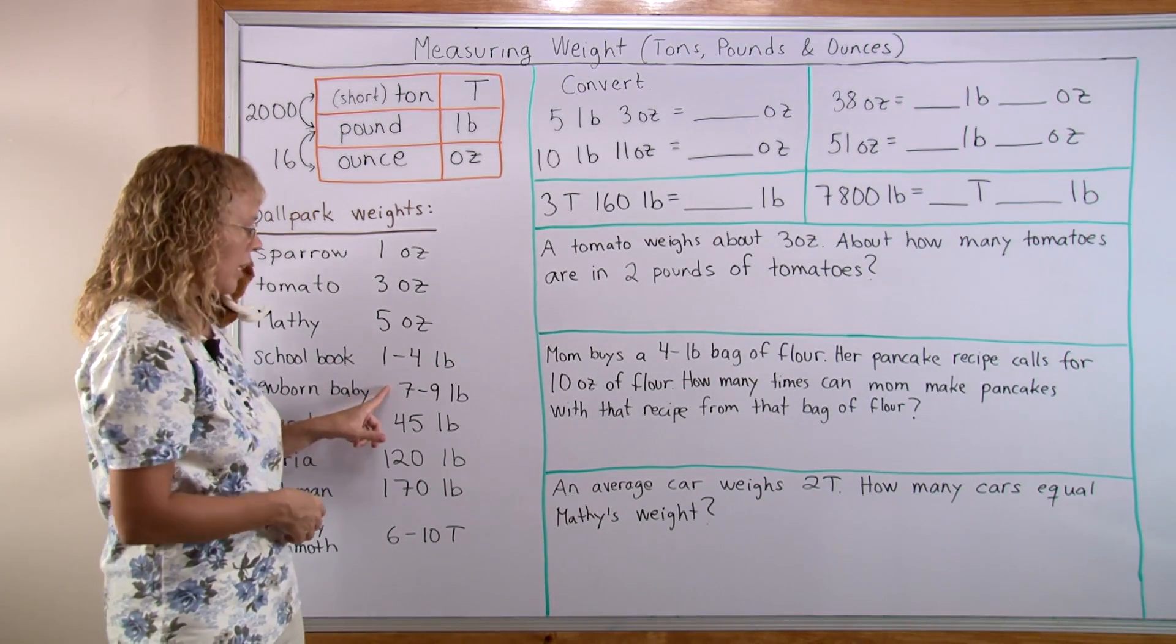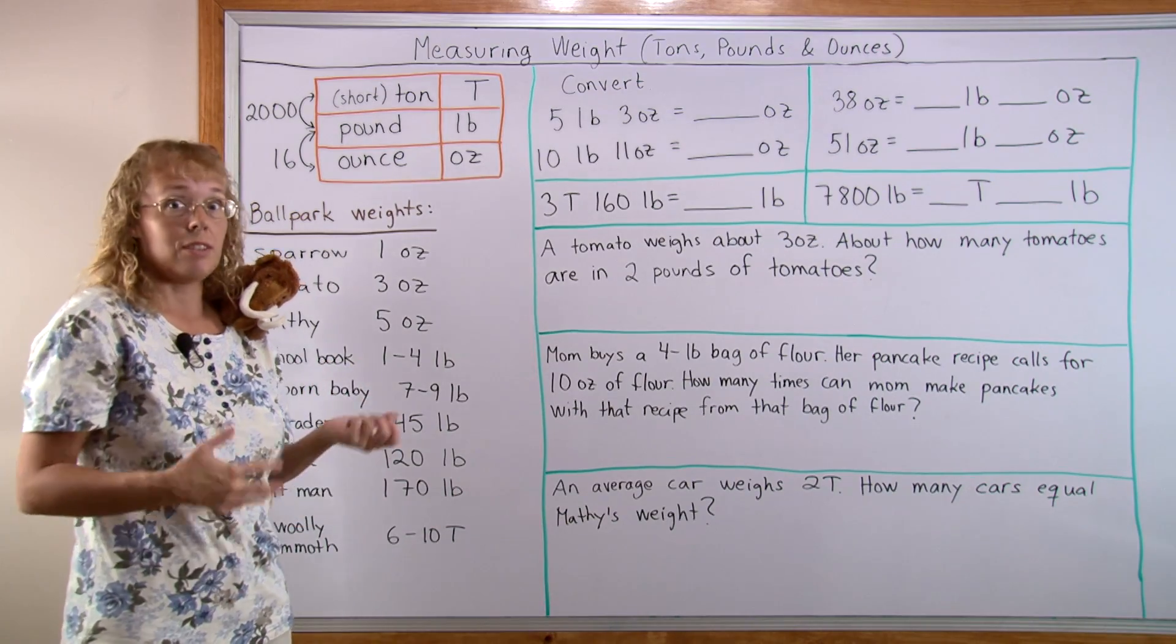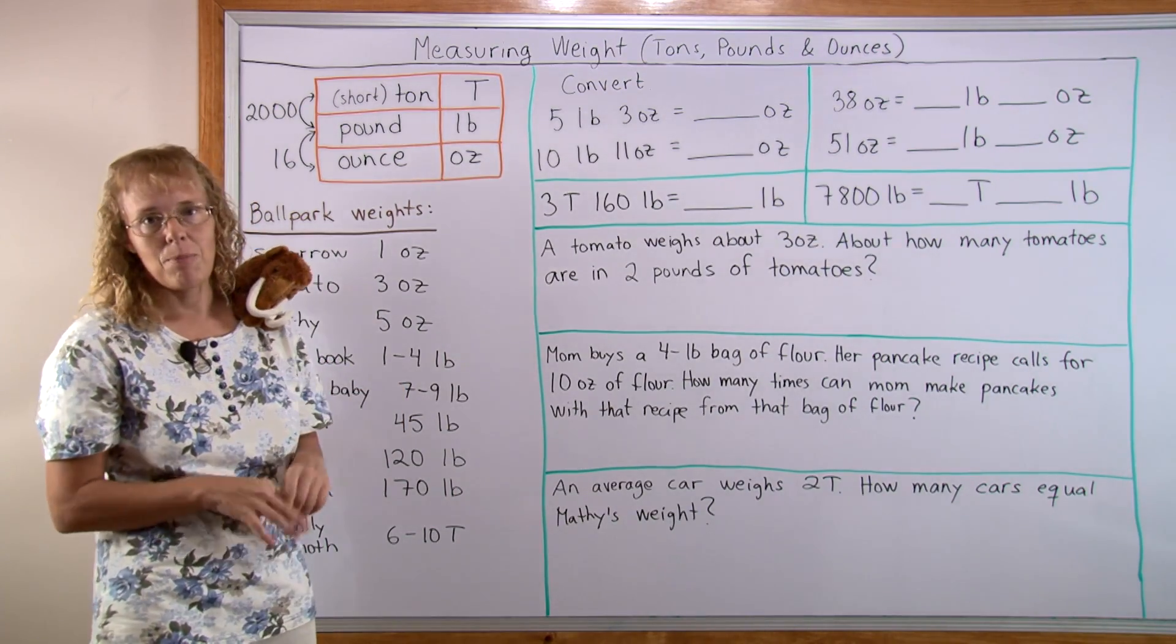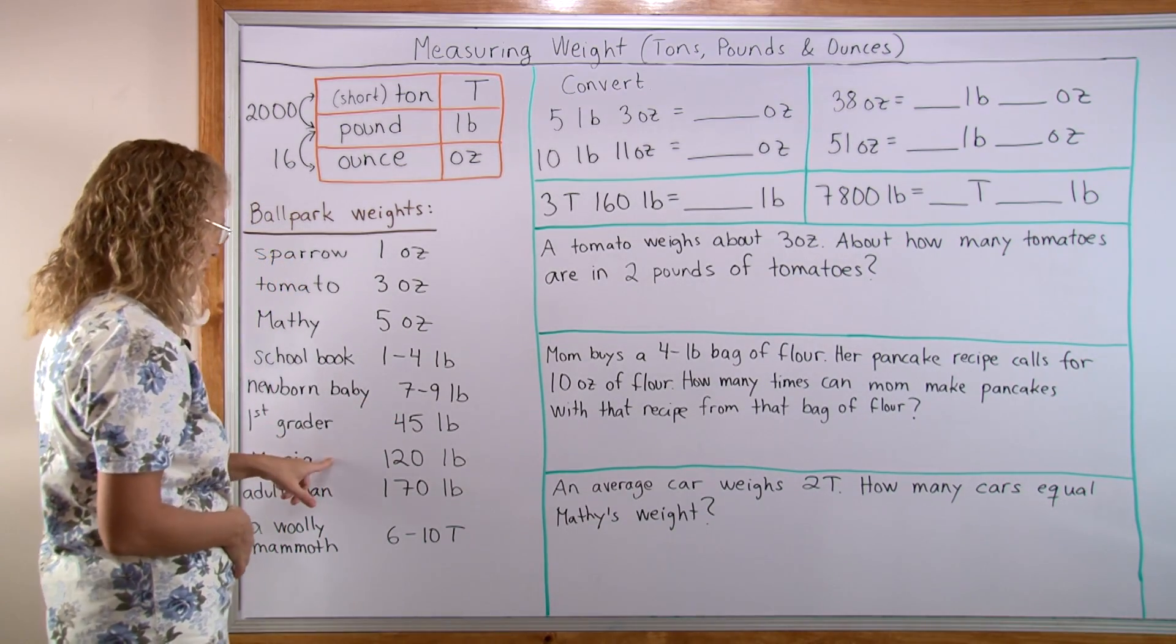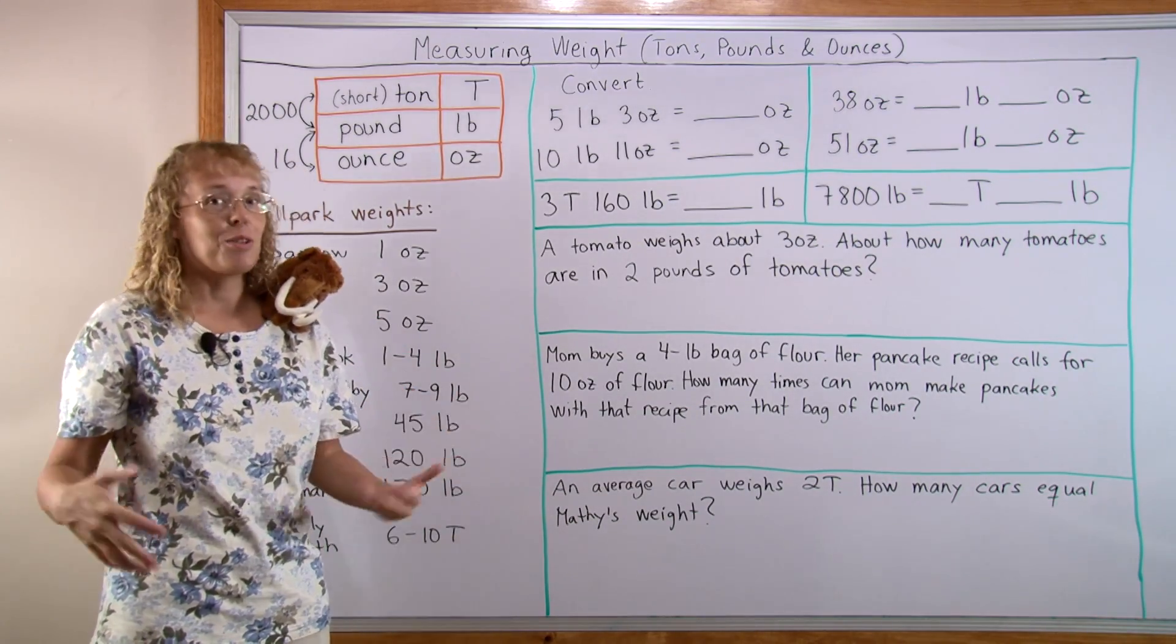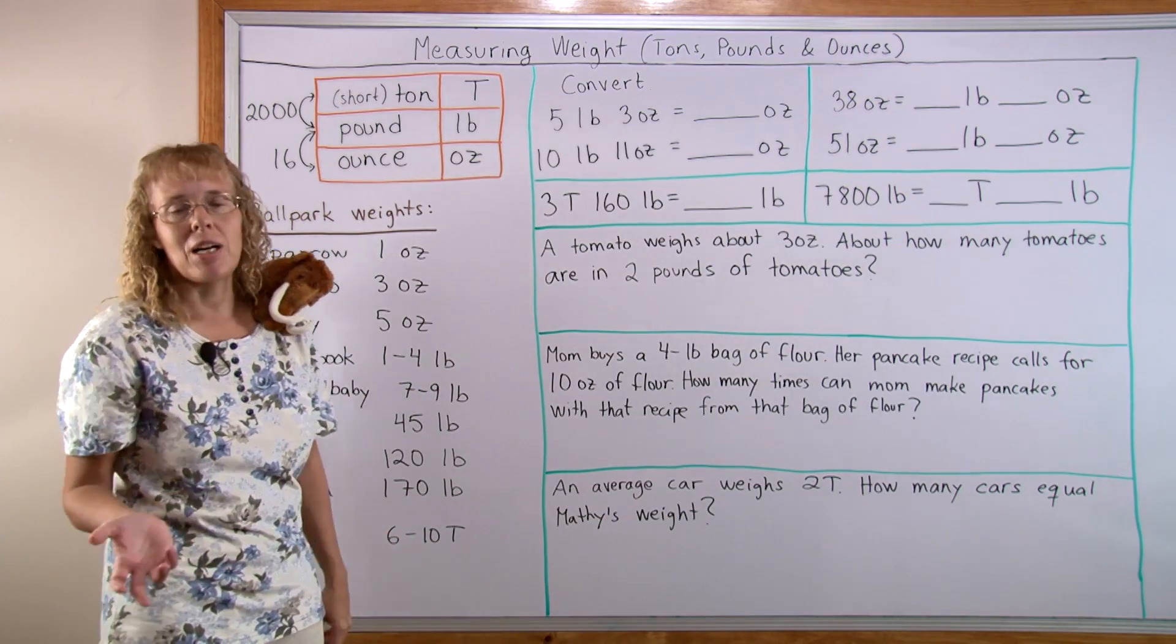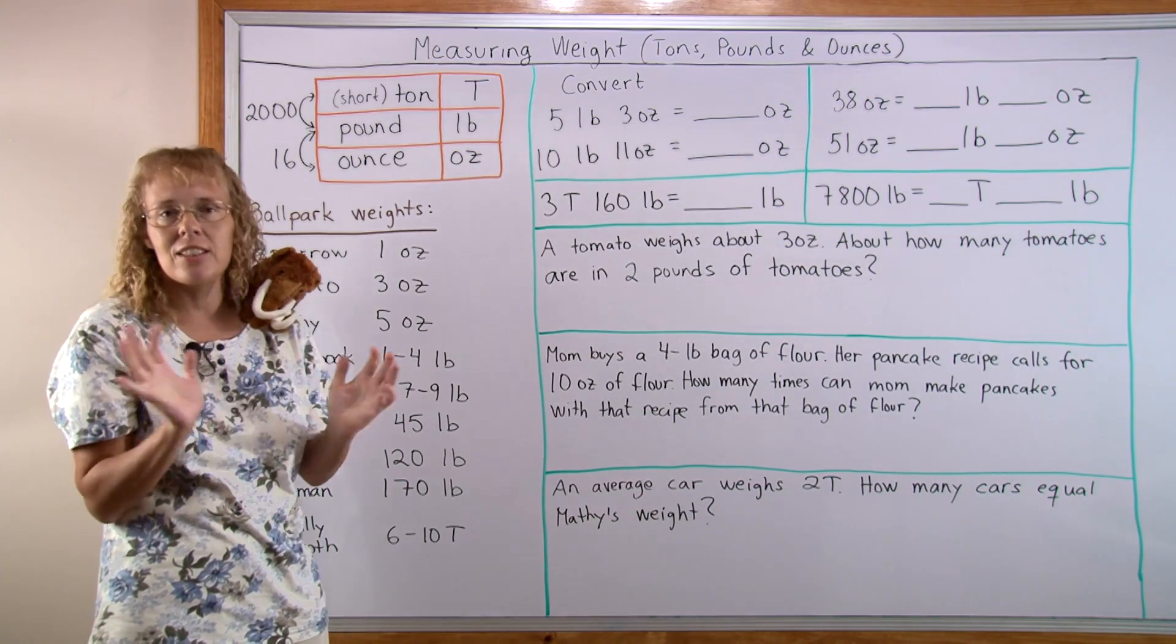A newborn baby: typically seven pounds, but some bigger babies are eight, nine, or even ten pounds. A first grader could be around 45 pounds, but that varies. I usually weigh a little over 120 pounds, so you can think of that as a ballpark figure. An adult man: 170 pounds, but some weigh over 200, some only 150. It varies.